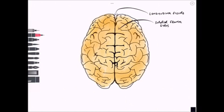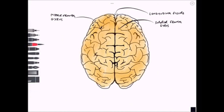In the frontal lobe we can separate this out to the superior frontal gyrus, which runs along the edge closest to the longitudinal fissure. Moving down in the frontal lobe we have the middle frontal gyrus and we also have the inferior frontal gyrus.